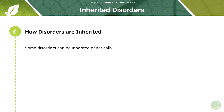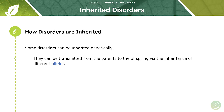Some disorders can be inherited genetically - all that means is that it's encoded within the genome of the person - whereas other disorders might be obtained during the life of the patient. For example, if a patient has a car accident and has severe brain damage, that's a disorder they've obtained within their lifespan. But on the contrary, some disorders can be inherited from birth, so it's in their genetics. These particular mutated genes can be transmitted from the parents to the offspring via the inheritance of different alleles.